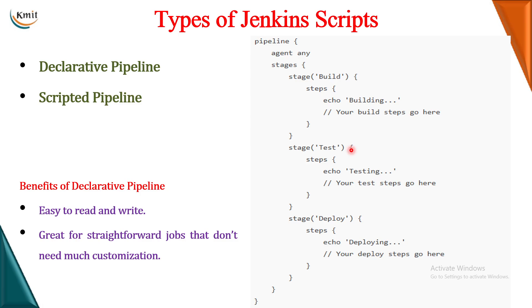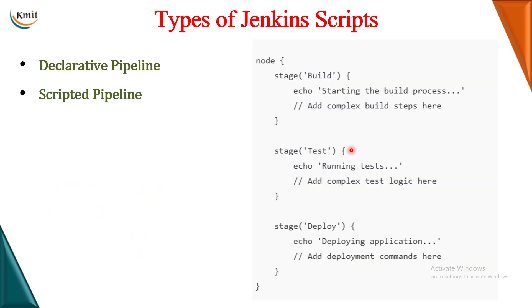Now let us see an example of the scripted pipeline. This is how your scripted pipeline will actually look like. The scripted pipeline will start with something called as node. Node is specifying on which machine you have to run this script. In the previous declarative pipeline it could run on any machine - master or any of the slaves. But in the scripted pipeline you have to specifically mention in which system to run this script - whether it is the master, slave 1, slave 2.